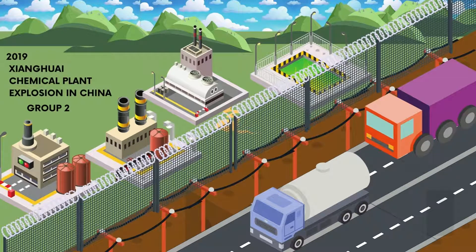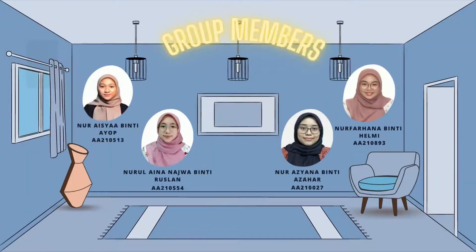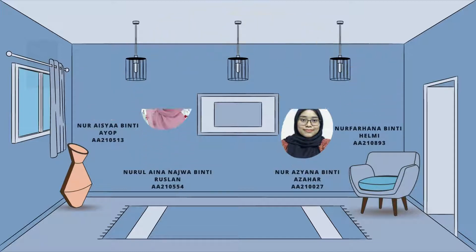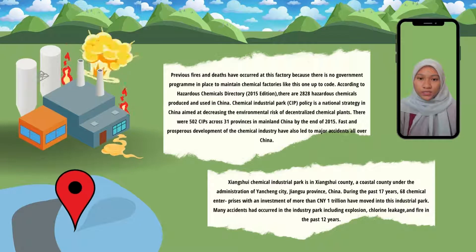Assalamualaikum warahmatullahi wabarakatuh. We are from group 2 and we are going to present about the Zhangxiu chemical plant explosions in China in 2019. Let me introduce my group members: Nur Aisha binti Ayub, Nurul Aina Najwa binti Roslan, Nur Aziana binti Azhar, and Nur Farhana binti Halmi. My name is Nur Aisha binti Ayub, and I will explain the introduction and background of the incident.